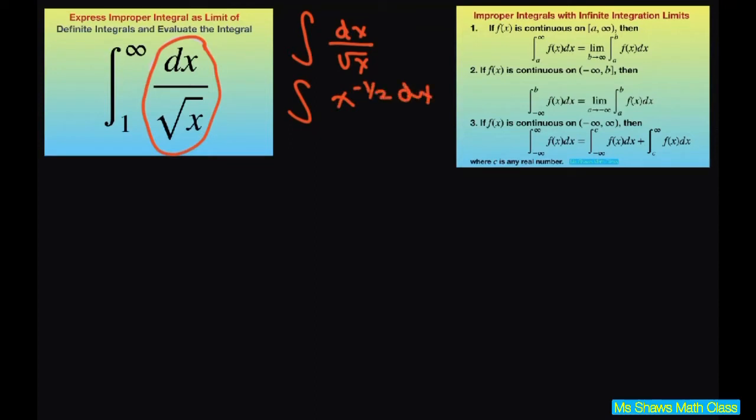And then when you integrate this, you're going to add 1. So that's going to be 1 half divided by 1 half. So that's going to give you 2 square root of x. So now we know that part.